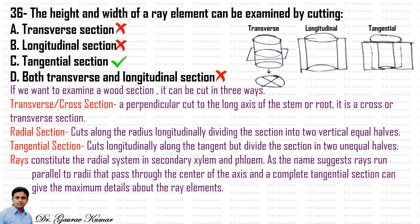A wood section can be cut in three ways. The transverse or cross section makes a perpendicular cut to the long axis of the stem or root. The radial section cuts along the radius longitudinally, dividing the section into two vertical equal halves. The tangential section cuts longitudinally along the tangent and divides the section into two unequal halves. Rays run parallel to radii passing through the center axis, and a complete tangential section gives maximum details about the ray element. Hence the answer is the tangential section.